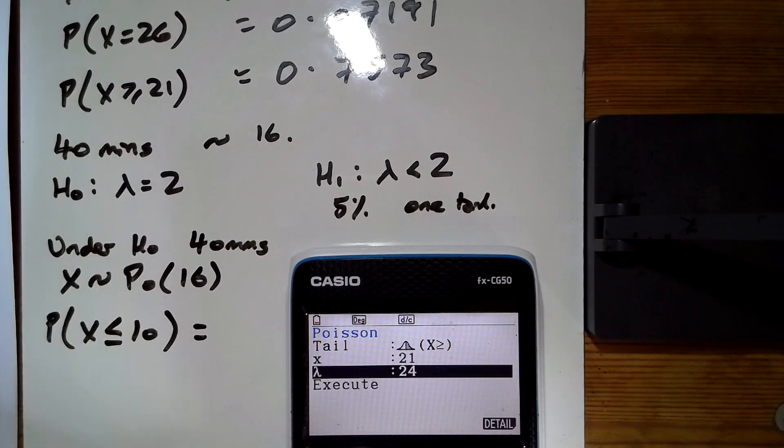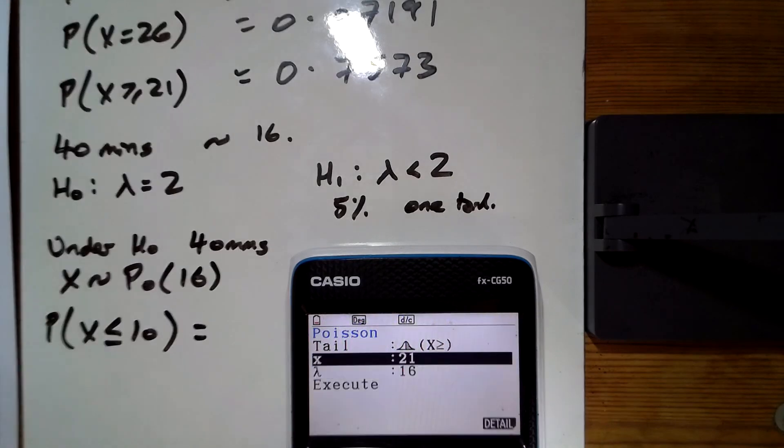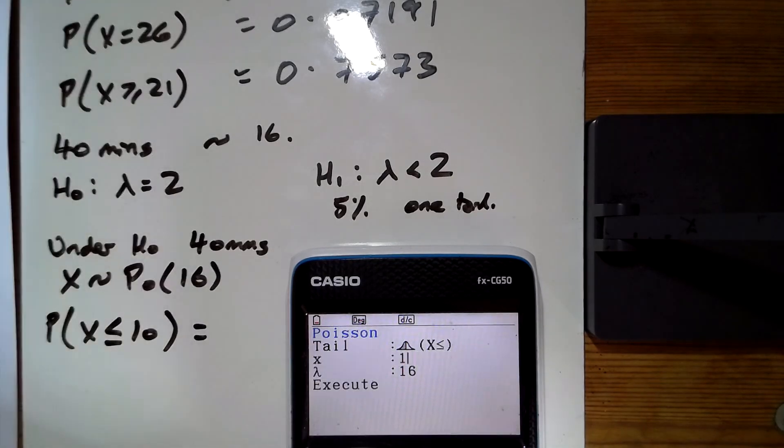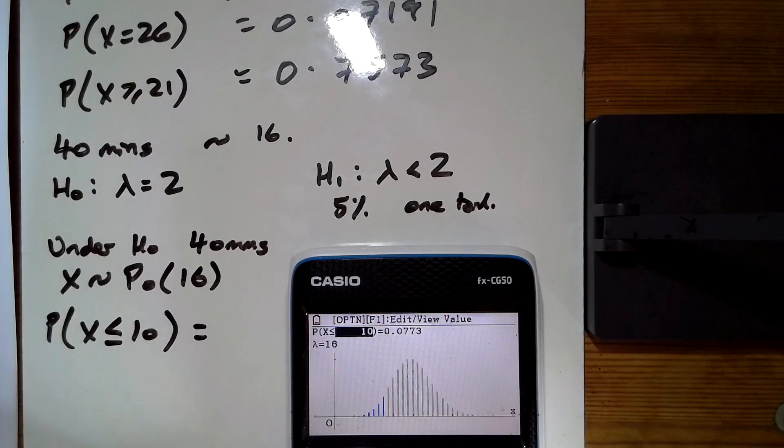So the mean is now 16, and we want less than or equal to 10. The probability of that is 0.0773.